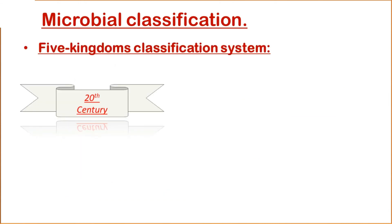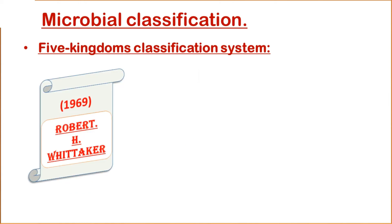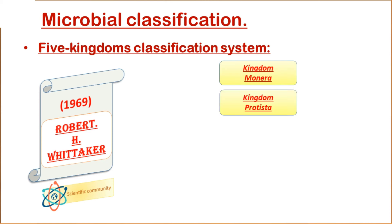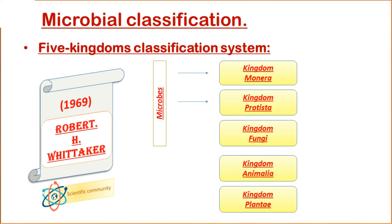As the 20th century progressed, advancements in cell biology and evolutionary biology led scientists to question the three-kingdom classification scheme proposed by Ernst Haeckel. In 1969, Robert H. Whittaker came up with another system that gained worldwide acceptance in the scientific community. This system recognizes five kingdoms: Kingdom Monera, Kingdom Protista, Kingdom Fungi, Kingdom Animalia, and Kingdom Plantae. Microbes are classified into the first three kingdoms — Kingdom Monera, Kingdom Protista, and Kingdom Fungi.